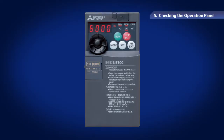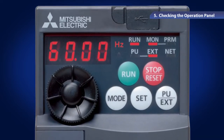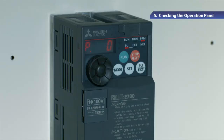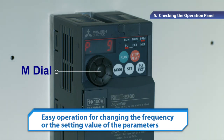Turn on the inverter's power and check the operation panel. The operation panel has a four-digit LED monitor showing the frequency value or parameter number. Let's look at the setting M dial immediately underneath the monitor. You can easily change the frequency or setting value of the parameters using this dial.